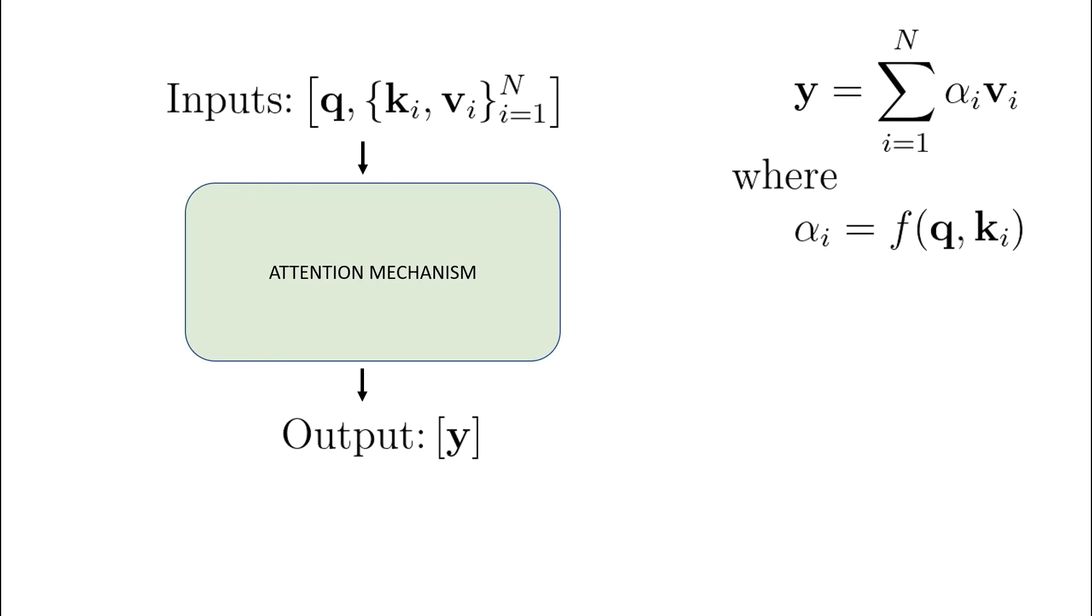However, there is something huge missing here. You may have noticed that all the equations here are very deterministic. We don't have any learnable parameters that can be updated during the training of a model that uses attention. We can introduce fixed size matrices of learnable parameters by performing linear transformations of our keys, values, and query.